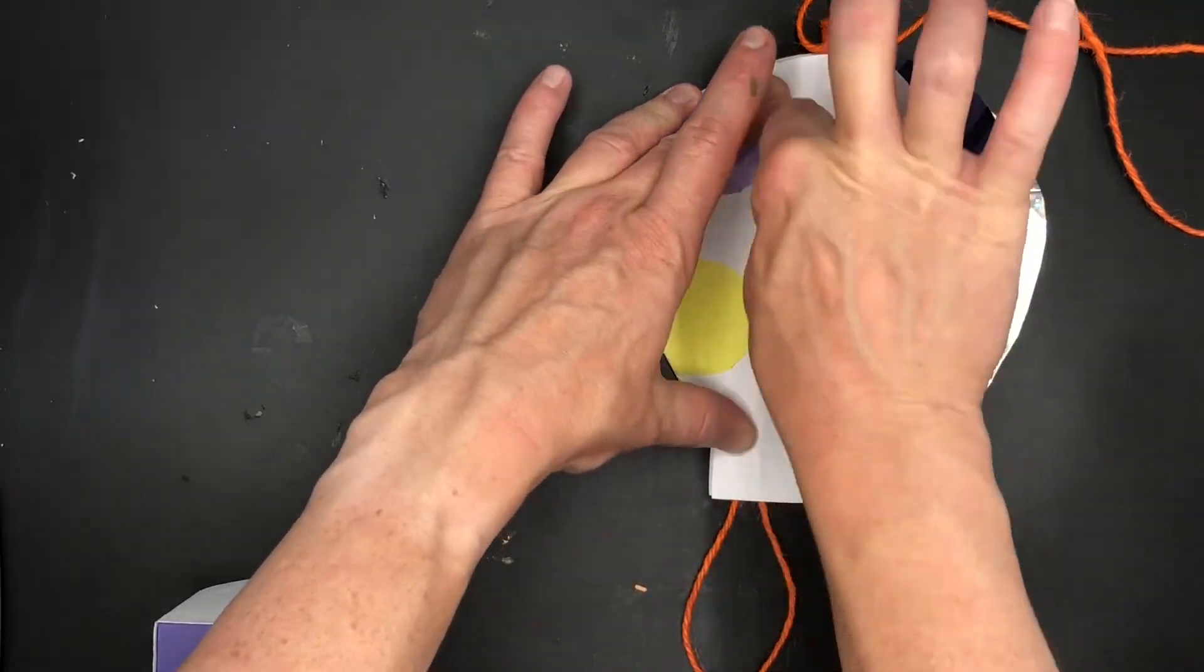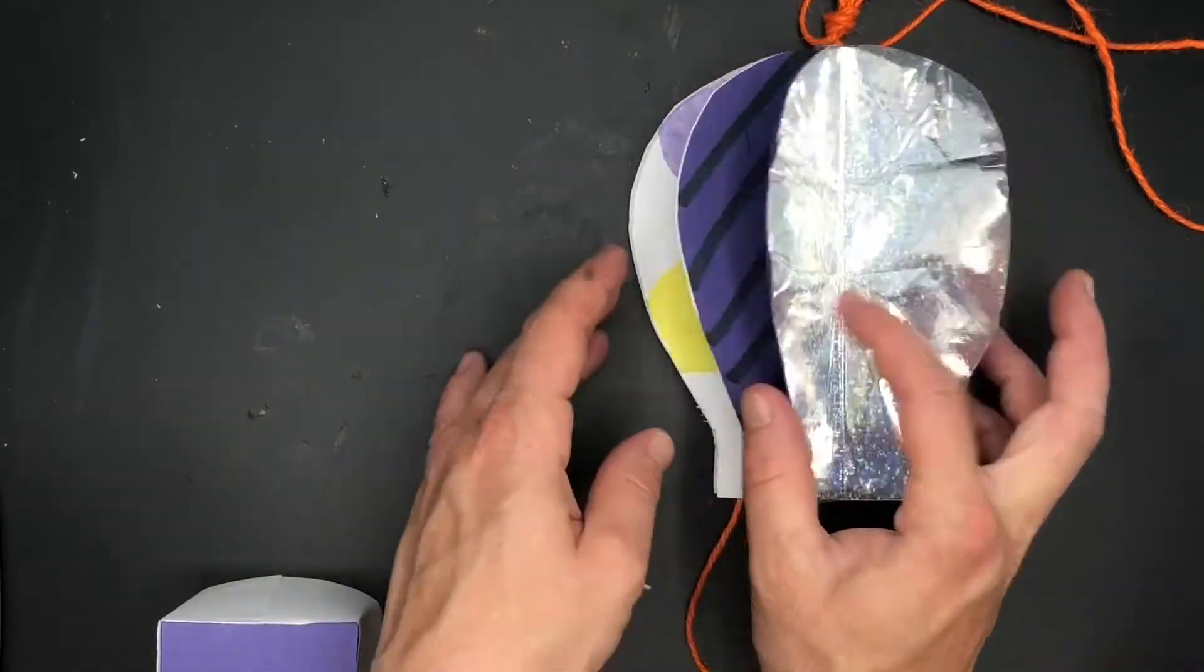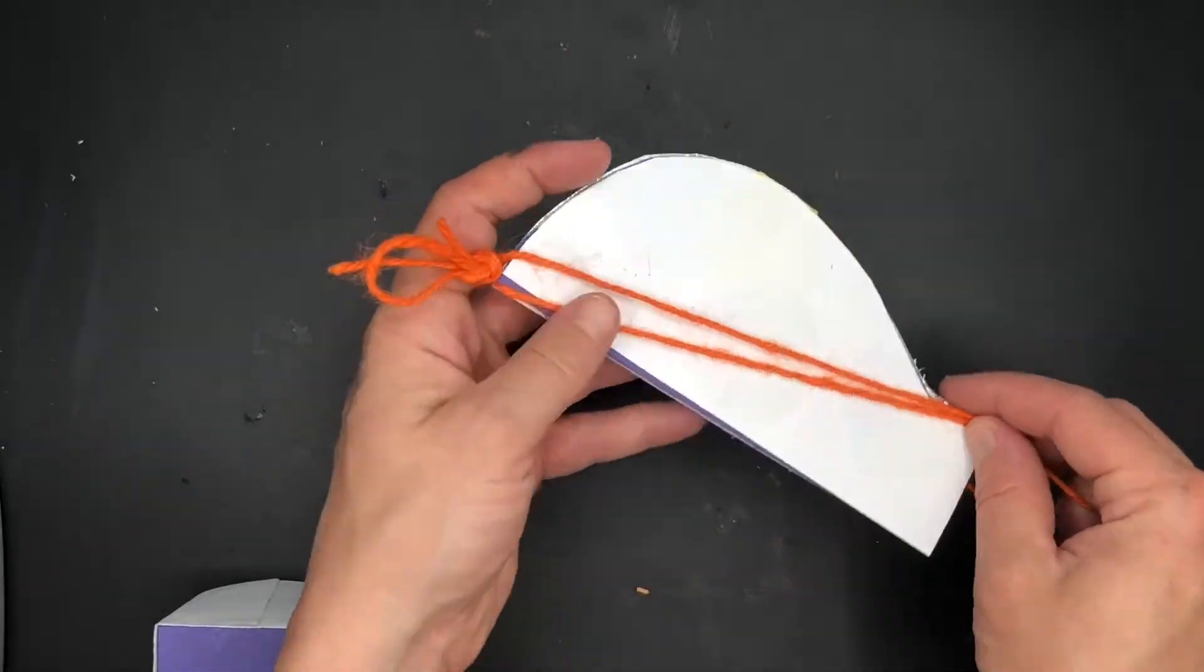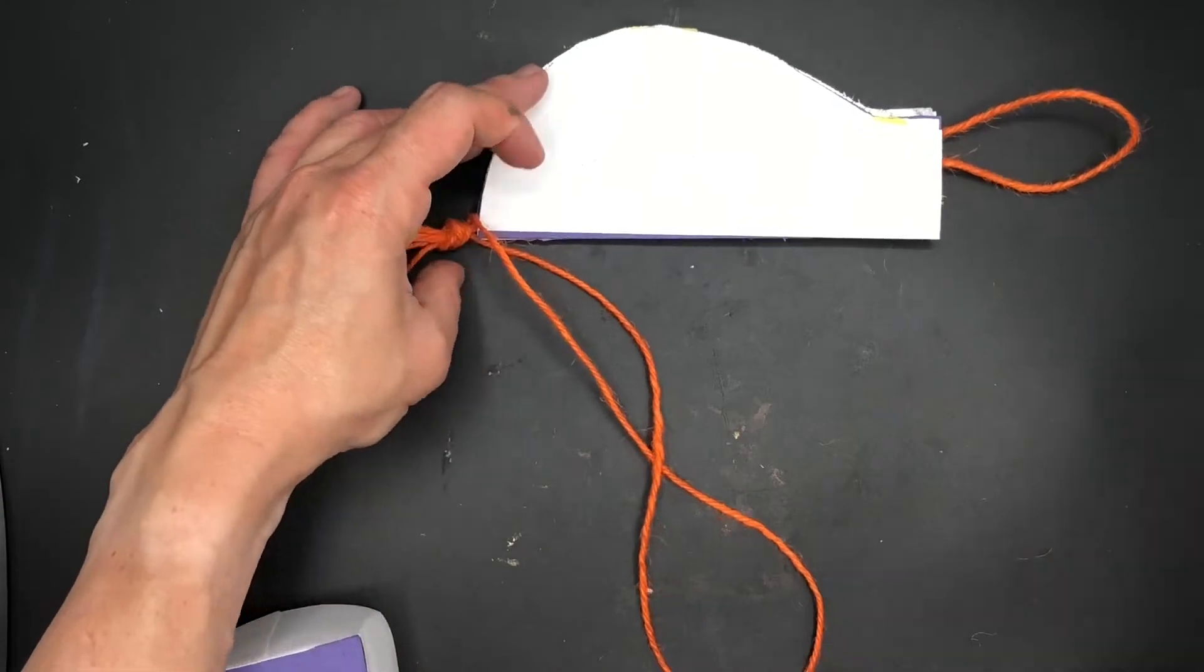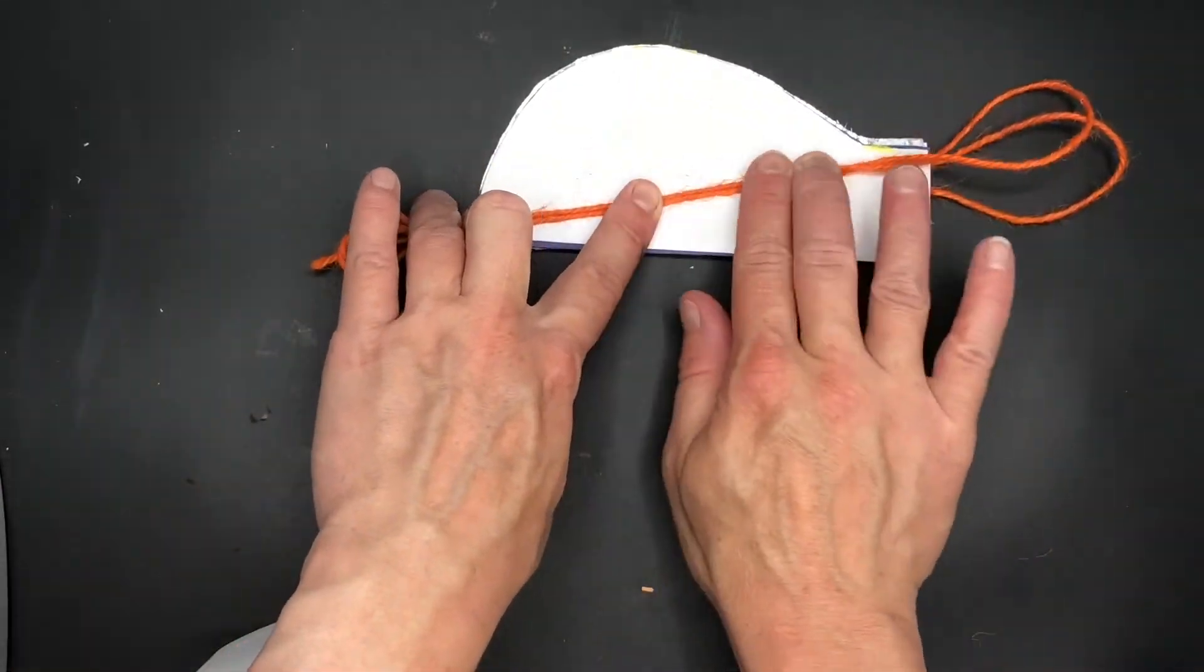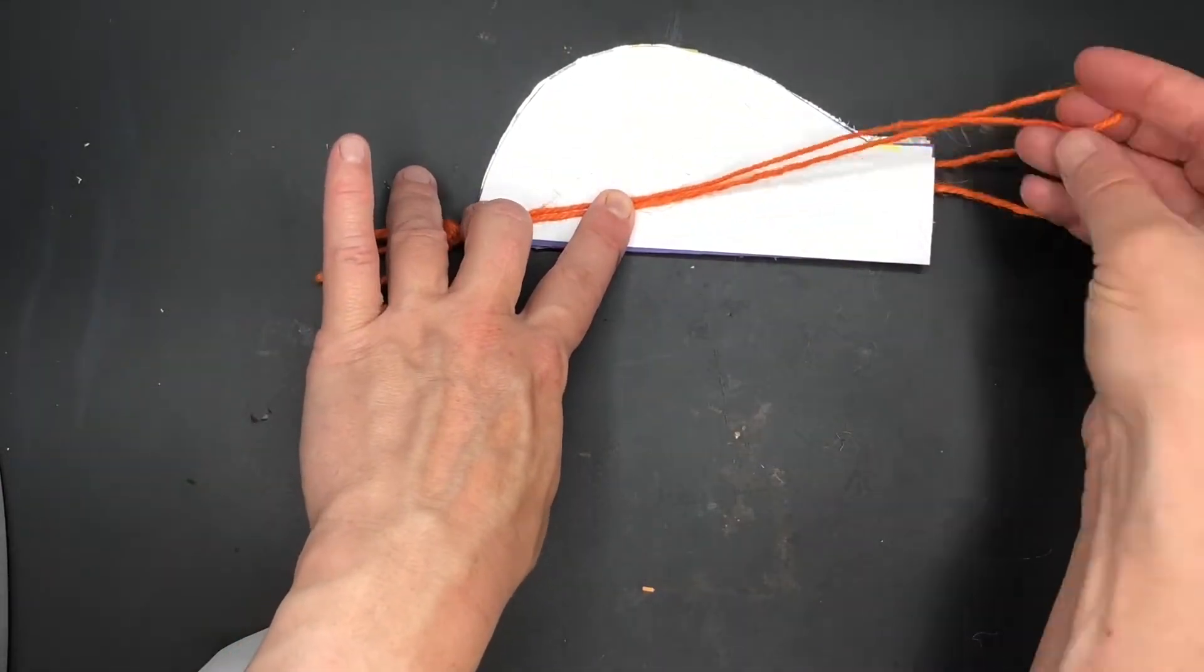Making sure it's stuck I'll then repeat this process on the other half. So lay my string down, cover that area with glue, make sure it's really well stuck and sandwich the other half of my balloon together.